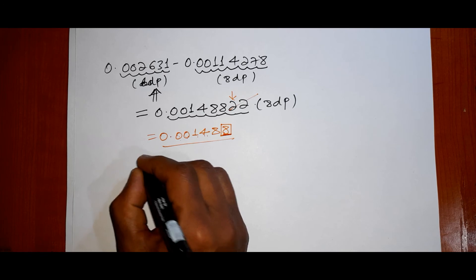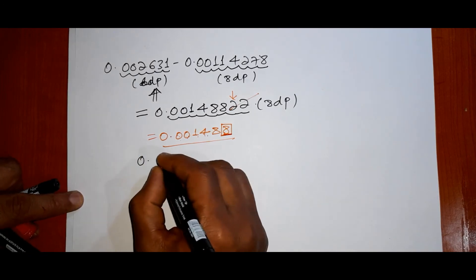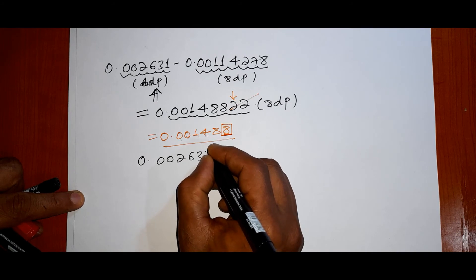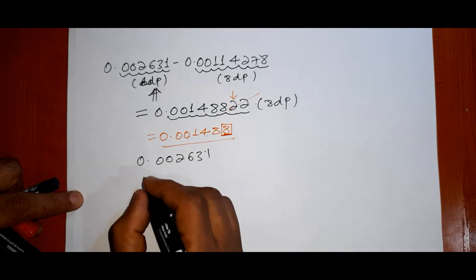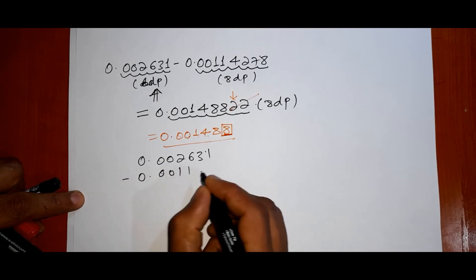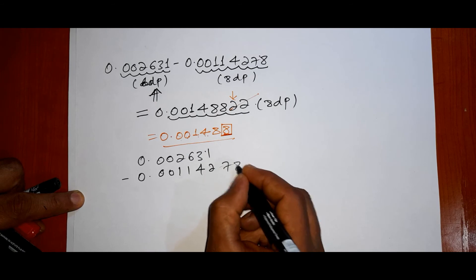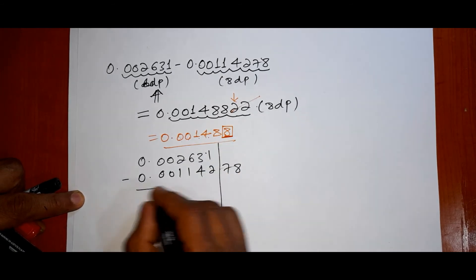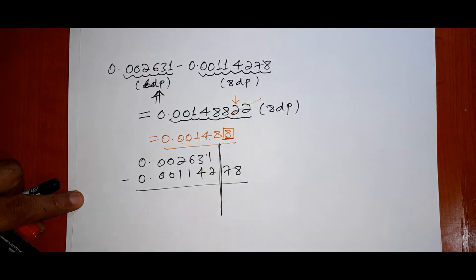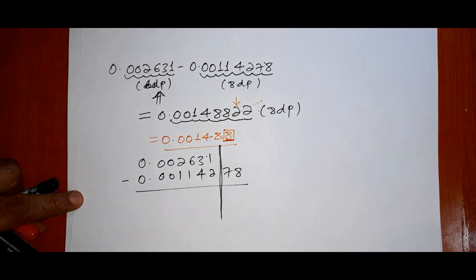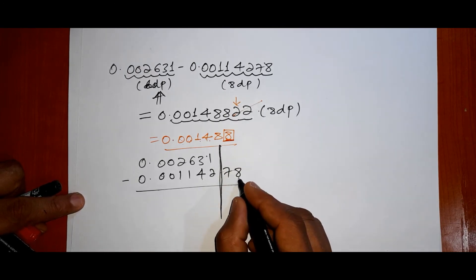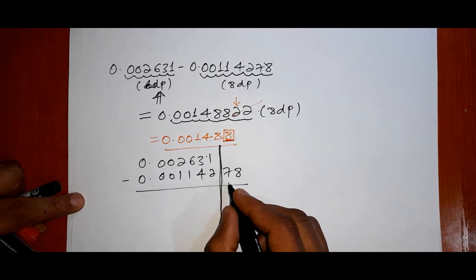To summarize: 0.0002631 minus 0.0001142​78. The result should be on the level of the number with fewer decimal places. By drawing a vertical line, the result is rounded to six decimal places.